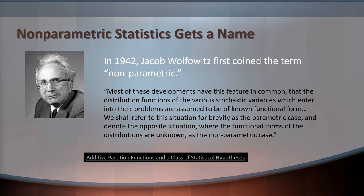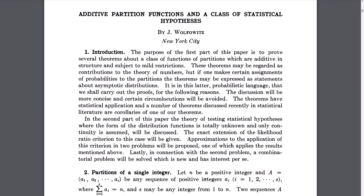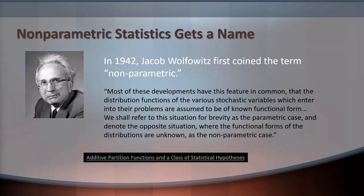What about the term "non-parametric"? The first time it was used was in 1942, when Jacob Wolfowitz first coined the term "non-parametric" in his article "Additive Partition Functions and a Class of Statistical Hypotheses."